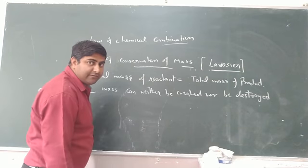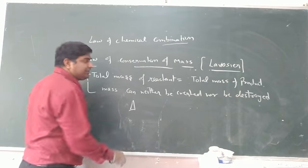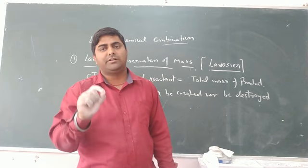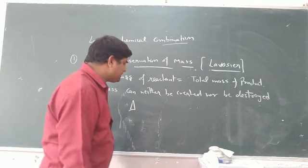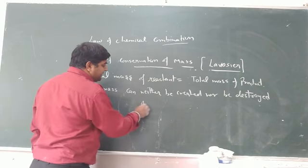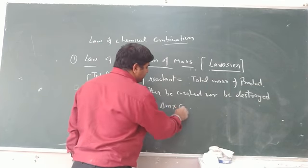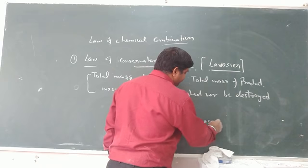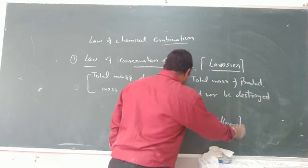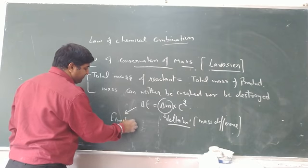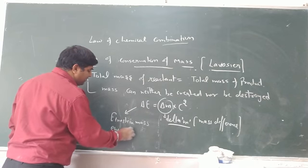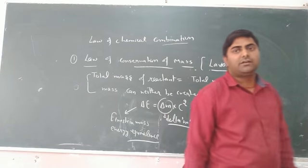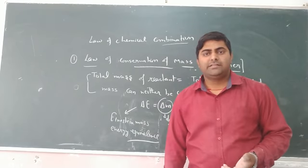The total mass of reactants is always equal to the total mass of products. If there is a slight difference in the mass of the reactant and product, it means that small mass has been converted into energy — by Einstein's mass-energy equivalence, which states that E equals delta M into C squared. Delta M means mass difference. This equation is called Einstein's mass-energy equivalence.